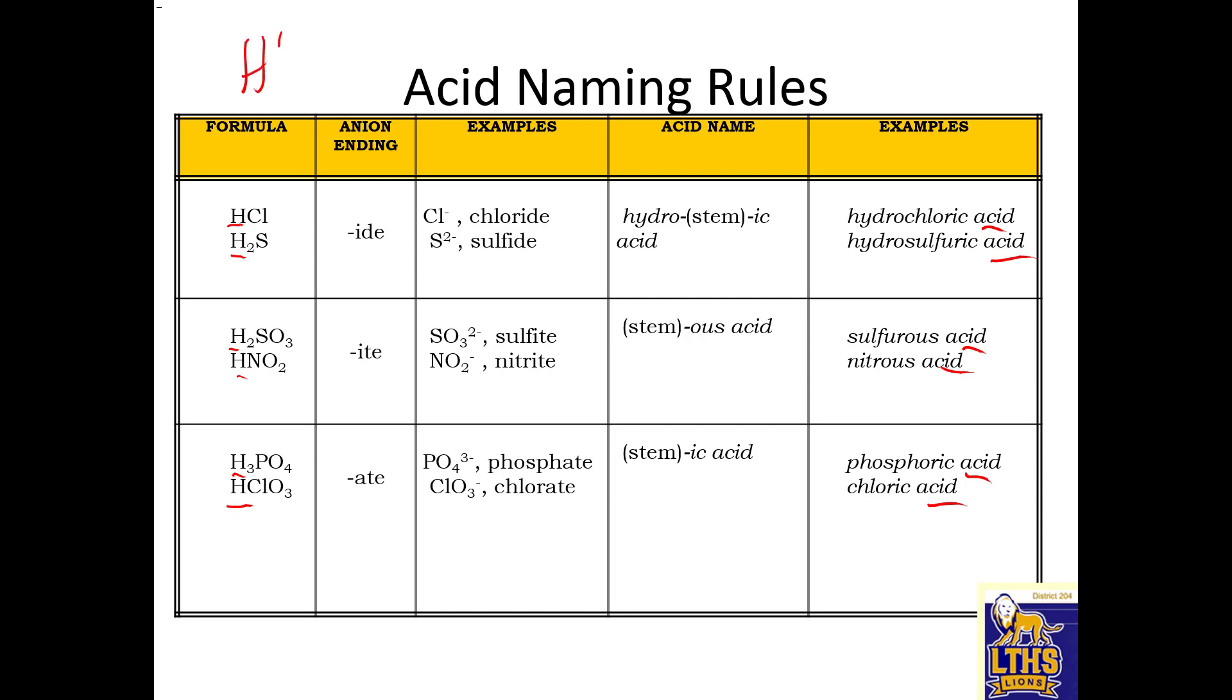The first part is always the H+ from the acid, so the second part is the anion. Anions can end in three endings: ide, ite, or ate. If the original anion ended in ide, then you put hydroic acid. If the original anion like sulfite ends in ite, then you put ous acid as the ending. If the original anion ended in ate like phosphate, then you change the ending to ic acid.